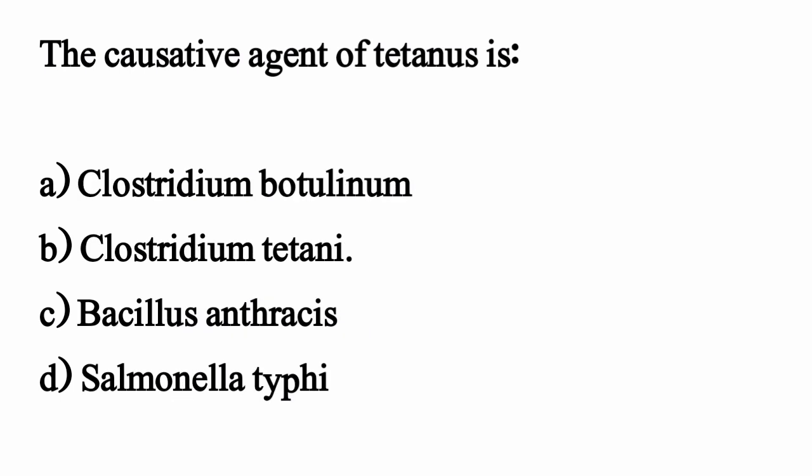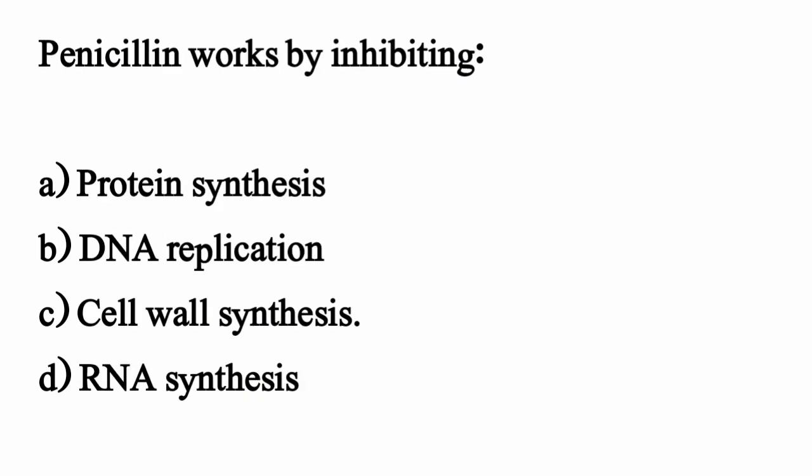The causative agent of tetanus is — the correct option is option B: Clostridium tetani. Penicillin works by inhibiting — the correct option is option C: cell wall synthesis.